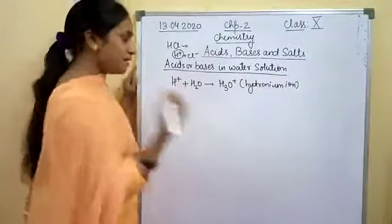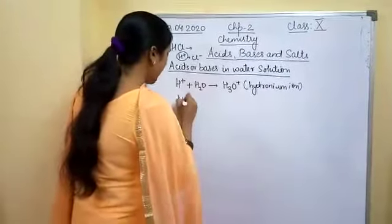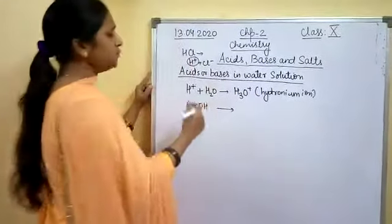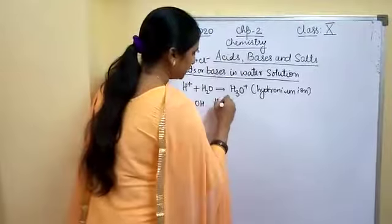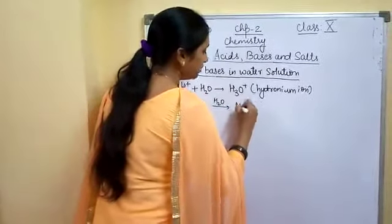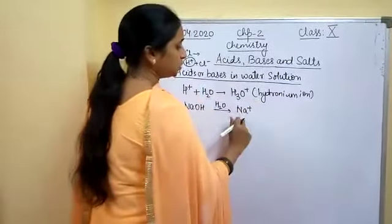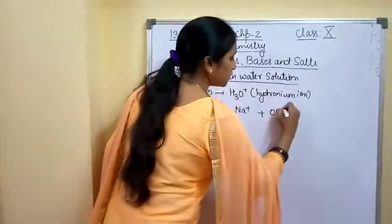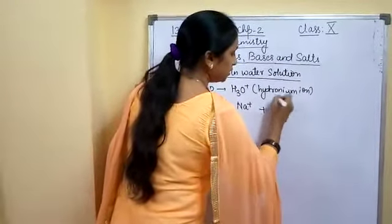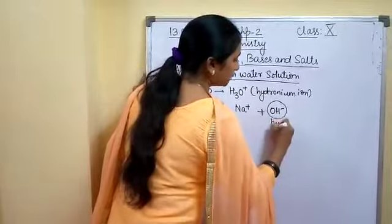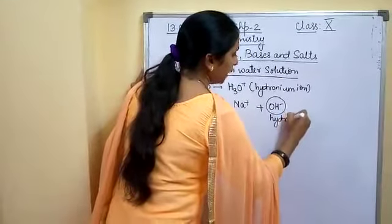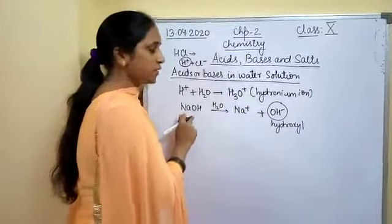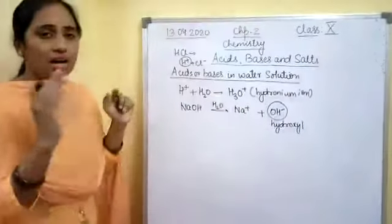Now for bases: NaOH is a base. In the presence of water, it releases Na⁺ (sodium ion) and OH⁻ (hydroxyl ion). So sodium hydroxide is called a base because it releases a hydroxyl ion in water.